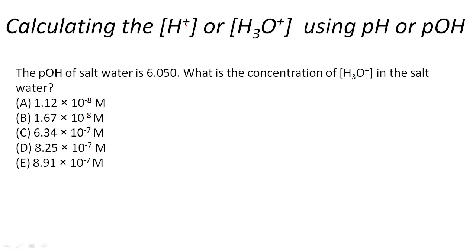Calculating the hydrogen ion concentration or hydronium ion concentration using pH or pOH. In this problem, the pOH of salt water is 6.050. What is the concentration of hydronium in the salt water?